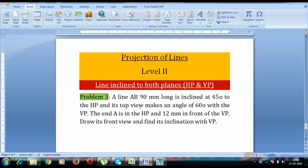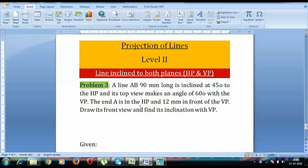Hey guys what's up, this is Manas and let's begin with problem number three from level two. A line AB 90mm long is inclined at 45 degrees to the HP and its top view makes an angle of 60 degrees to the VP. The end A is in the HP and 12mm in front of the VP.